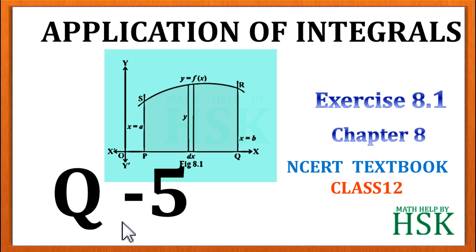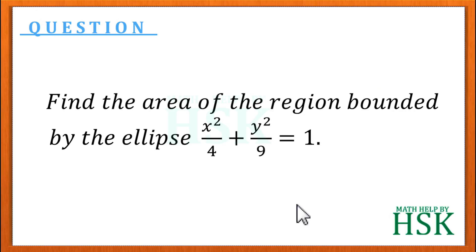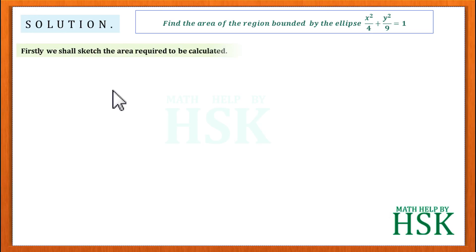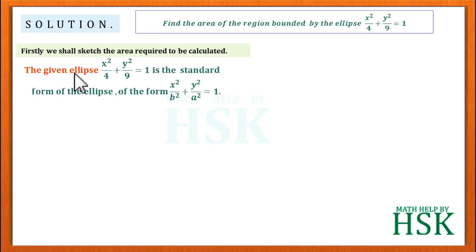Question number 5 of exercise 8.1 from the chapter 'Application of Integrals'. The question is: find the area of the region bounded by the ellipse x²/4 + y²/9 = 1. To solve this question, we shall first sketch the area required to be calculated.